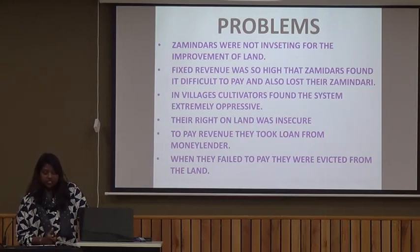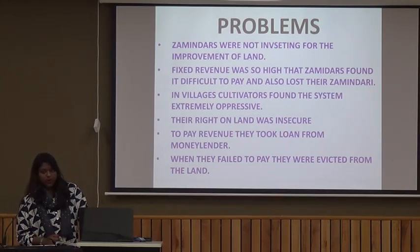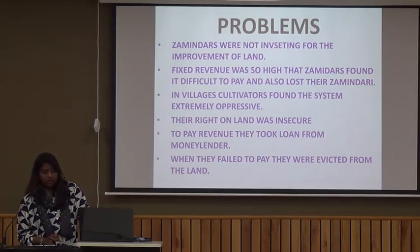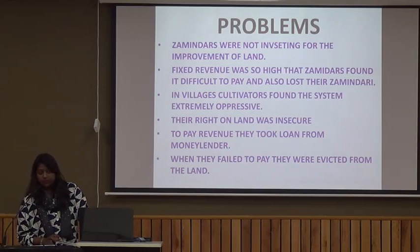In villages, cultivators found the system extremely oppressive. Their right on land was insecure because at any point of time, if they were not able to pay the taxes, the lands would be taken from them — lands they had tilled for generations. To pay the revenue, they took loans from money lenders which they were not able to pay back. When they failed to pay, they were evicted from their land.